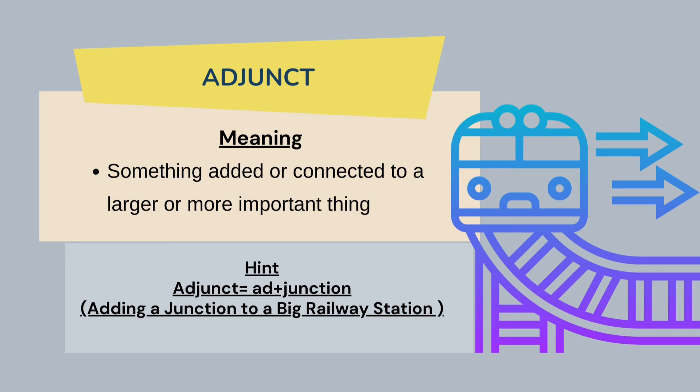Adjunct resembles 'add adjunction' — adding an adjunction to a big railway station, so basically we add something, we supplement or provide a supplement. You can also see in the illustration that an adjunct or adjunction is being added to a railway track.